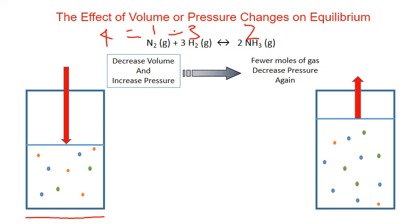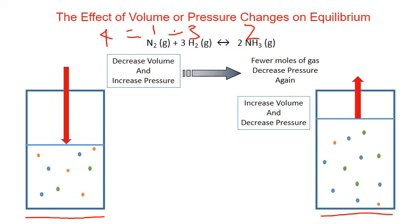If we disturb the system in the opposite direction — raising the piston and increasing the volume, which will decrease the pressure on those gases — the reaction will shift to the side that results in an increase in pressure to counteract that decrease. That means it shifts to the side with more moles of gas. As a result, the reverse reaction is faster and we produce more of our reactants to increase that pressure again.